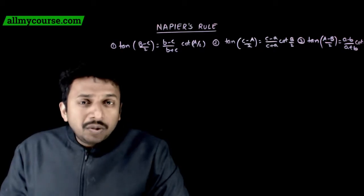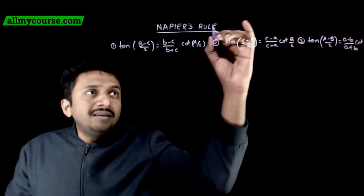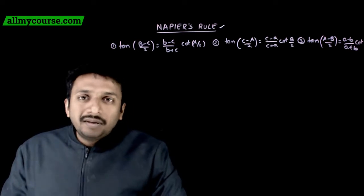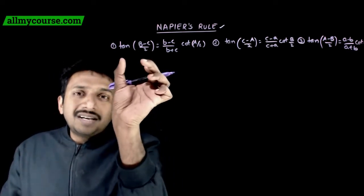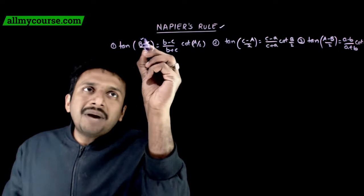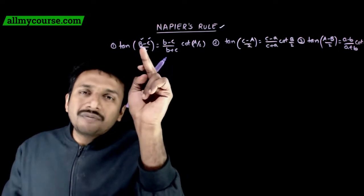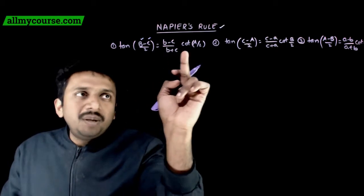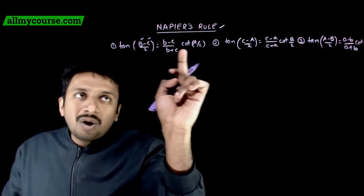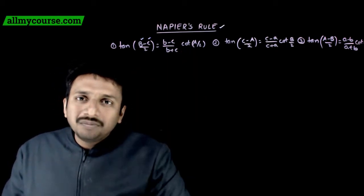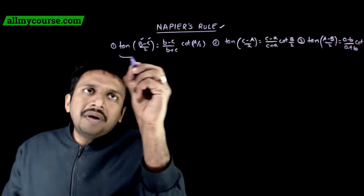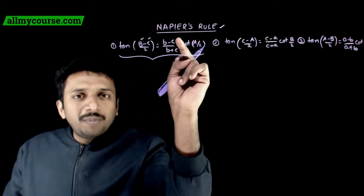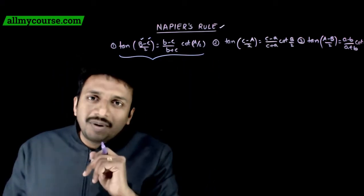In this video, let us look at the next formula which is called Napier's rule. Napier's rule says that tan of (B minus C) by 2, the difference of two angles by 2, is equal to (b minus c) by (b plus c) times cot of the remaining angle by 2. So if you have (B minus C) by 2, we have (b minus c) by (b plus c) into cot(A/2).